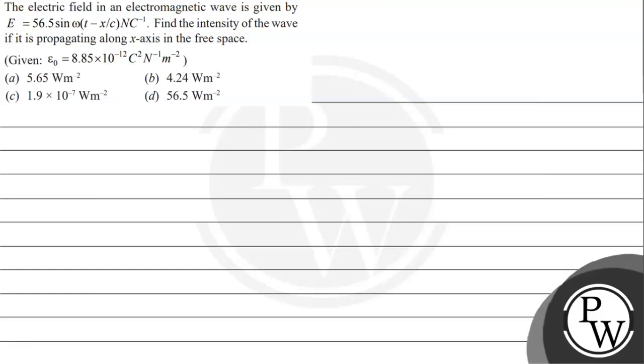Hello everyone, let's read the given question. The question says the electric field in an electromagnetic wave is given by E equals 56.5 sin(ωt - x/c) newton per coulomb. We need to find the intensity of the wave if it is propagating along the x-axis in free space.